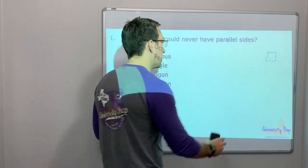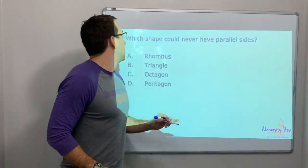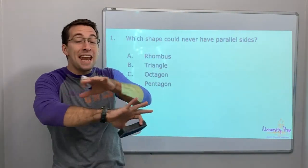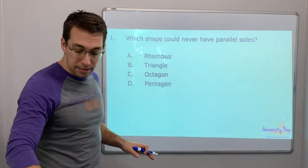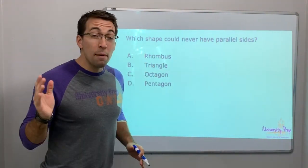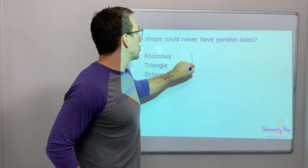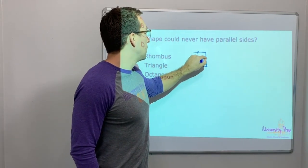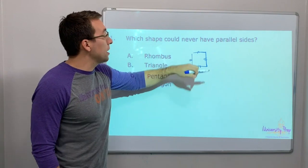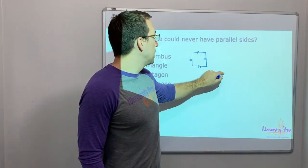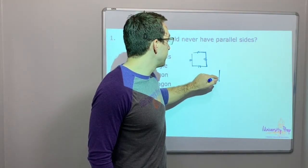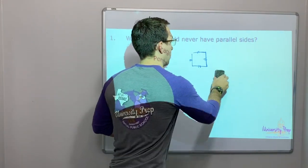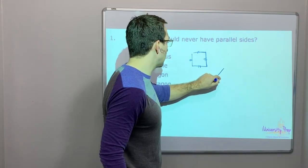So let's look at it. Which shape could never have parallel sides? A rhombus - remember a rhombus is, so a square has four equal sides, four equal angles, and they're all 90 degree angles. A rhombus, let's say, is a tilted square. That was a bad tilt. So we'll go tilted square.